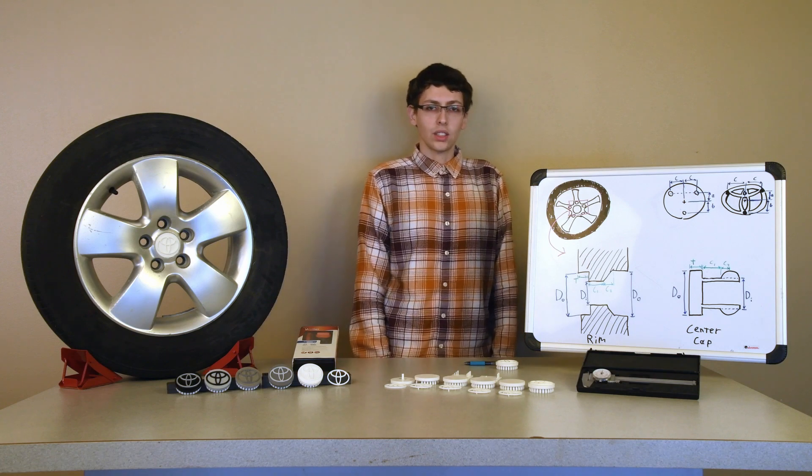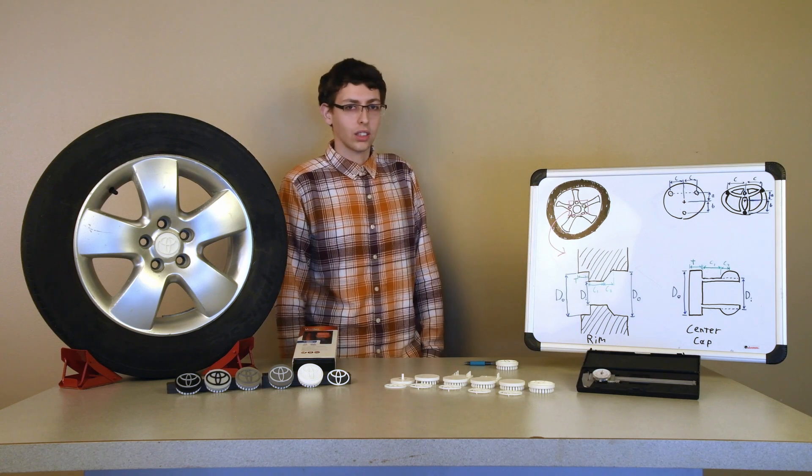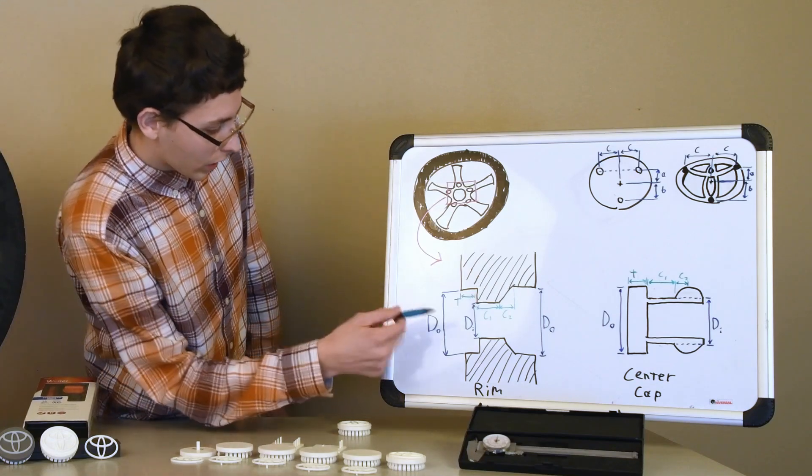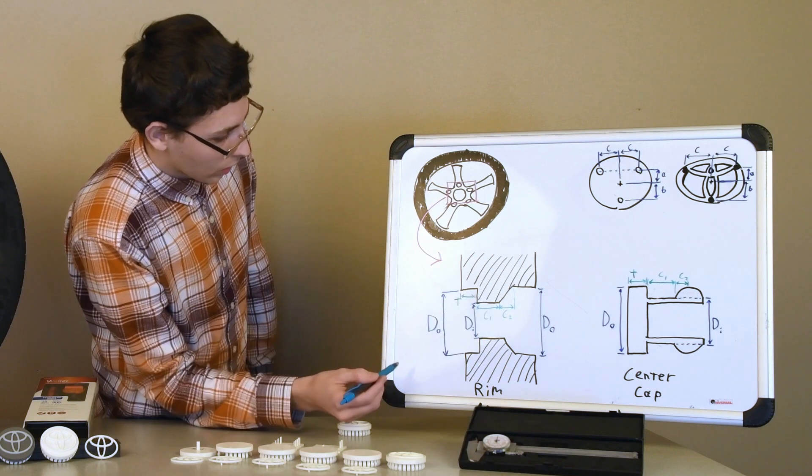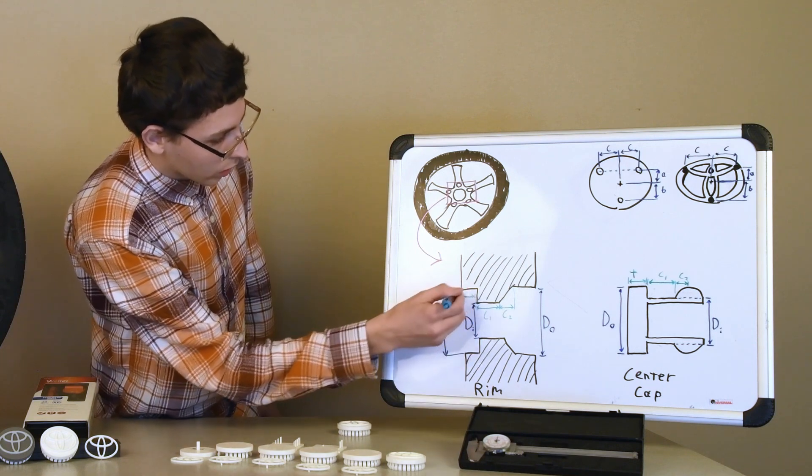Let's first take a quick look at the dimensions you want to consider when modeling your own center caps. First off, you've got the outside diameter here, you've got the inside diameter, you've got the thickness. This basically makes a cylinder right here.